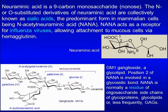Neuraminic acid is a 9-carbon monosaccharide. It has a carboxyl group at the C1 position and three additional carbons at the C6 position. The N- or O-substituted derivatives of neuraminic acid are collectively called sialic acids, the predominant form in mammalian cells being N-acetylneuraminic acid, or NANA. Here is a GM1 ganglioside, a glycolipid, and this is NANA.